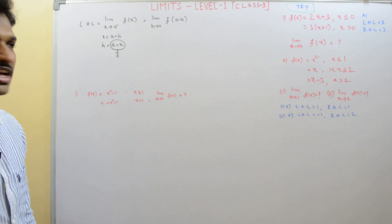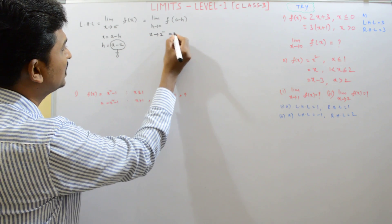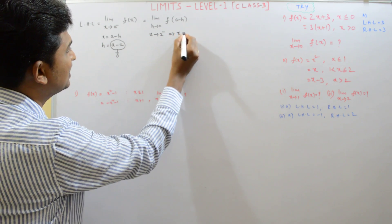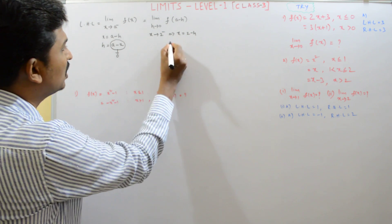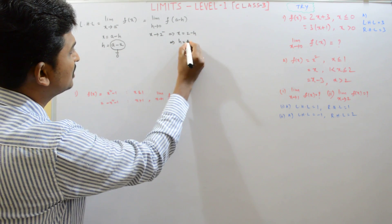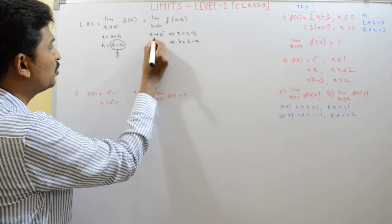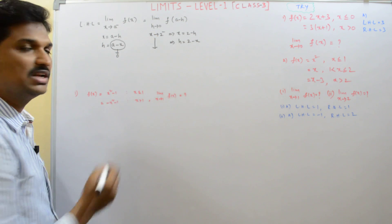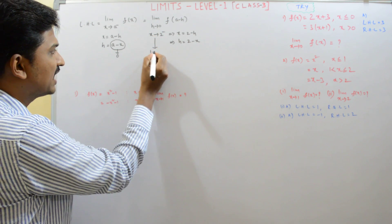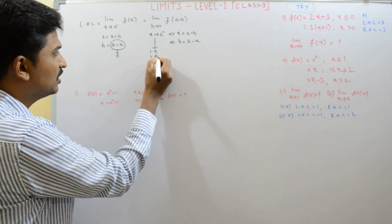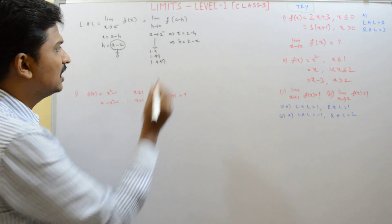This can be understood very easily with one example. Suppose x approaches to 2 from left. What can I write from this? It can be written as x equals 2 minus h. From this, h equals 2 minus x. x approaches to 2 from left means all x values are less than 2 and very near to 2. So we can take values like 1.9, 1.99, 1.999.